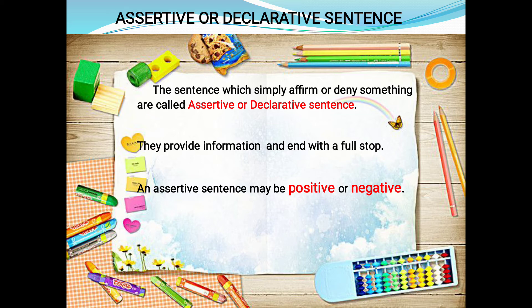Sentences which simply affirm or deny something are called assertive or declarative sentences. Affirm means yes, deny means no. For example, during lockdown if I ask whether you were at home, you say yes — that is affirming. If I say the color of the apple is blue and you say no, the color is red — you are denying. These sentences provide information and end with a full stop.